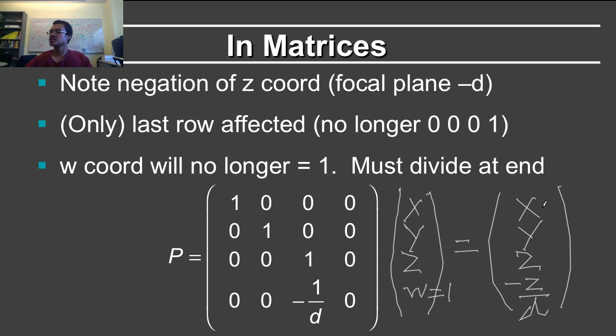Now if I de-homogenize this, you will see that x will be multiplied times d by z, y will be multiplied times d by z as we wanted, and in fact the z coordinate which I am going to drop, if you also multiply by d by z, it will be equal to d, which is just a constant, which is where the image plane is.